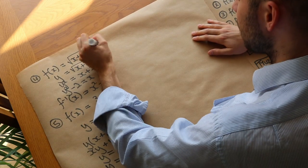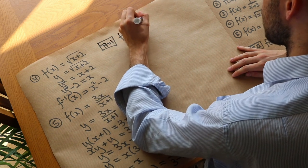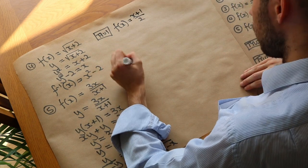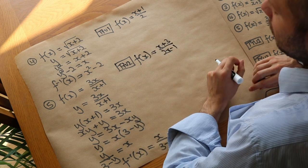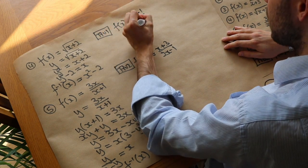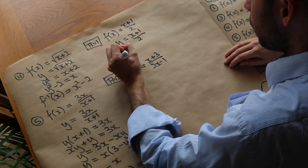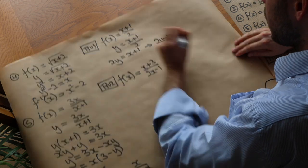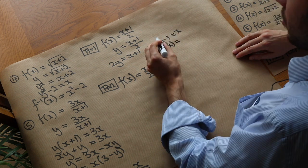To finish off, here are two test your understanding questions. First: f(x) = (x + 1)/2 — find the inverse function. Turn f(x) into y: y = (x + 1)/2. Multiply both sides by 2: 2y = x + 1. Subtract 1: 2y − 1 = x. So f⁻¹(x) = 2x − 1.